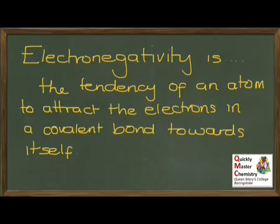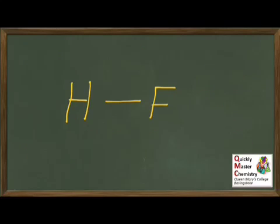Let's explore what that means with an example. Take, for example, the substance hydrogen fluoride, HF. Between the hydrogen and fluorine atoms in an HF molecule, there's a covalent bond, which means a shared pair of electrons. We could represent that like this with a cross and a dot.